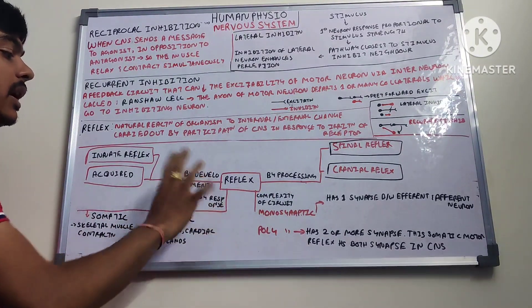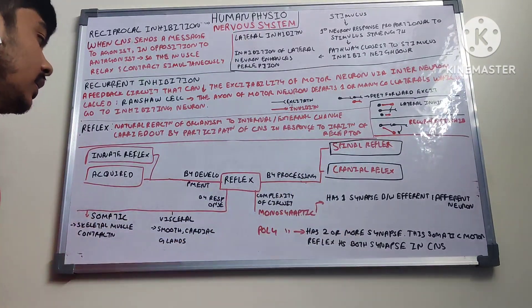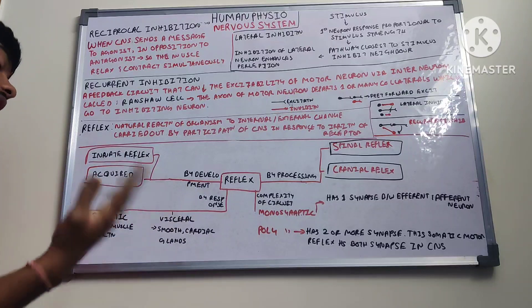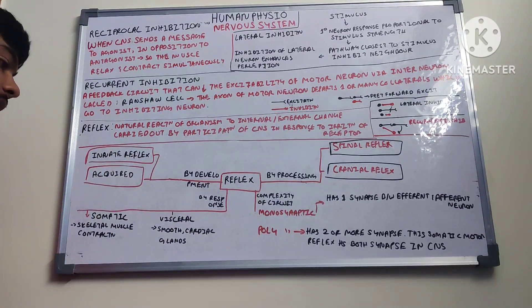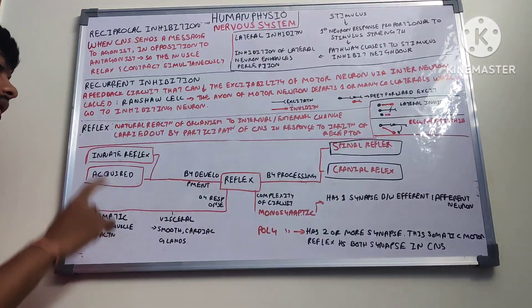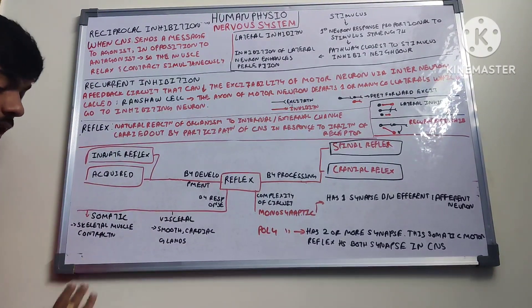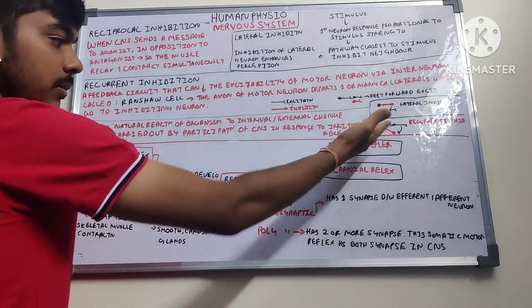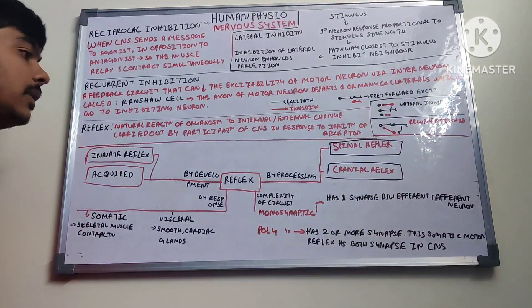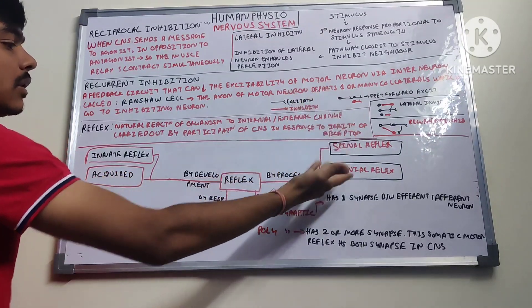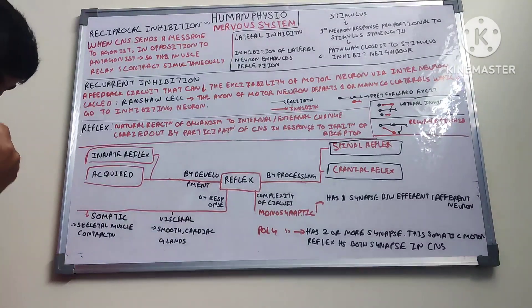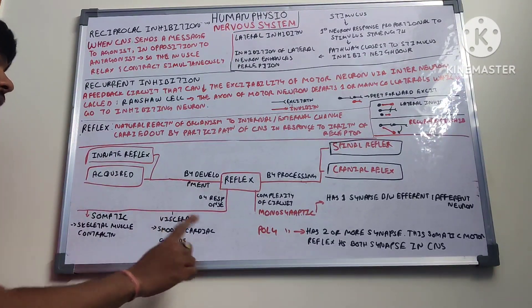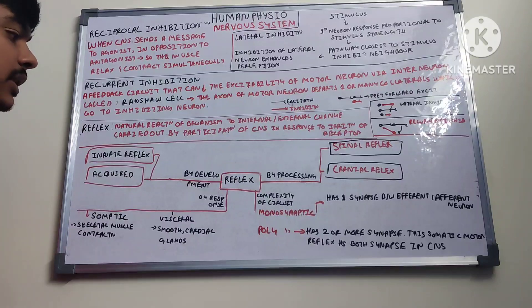Reflex can be divided by development, processing, response, and complex circuit. By development: innate (genetically inherited, like bracing yourself when falling) and acquired (learned, like knowing a pot is hot and not touching it). By processing: spinal reflex or cranial reflex. By response: somatic (contraction in skeletal muscles) or visceral (contraction in smooth muscles, heartbeat, gland control).